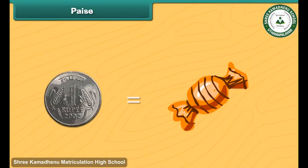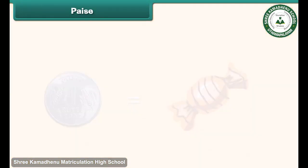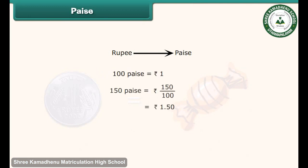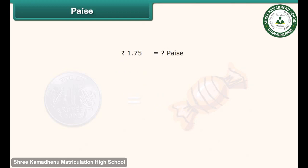Rahul purchased one toffee for 1 rupee. How will you convert this rupee into paise? 100 paise makes 1 rupee. Thus, 150 paise equals 150 divided by 100 rupees, which makes 1.50 rupees. When we convert paise to rupees, we divide by 100. How will you convert 1.75 rupees into paise? Multiplying 1.75 with 100, we get 175 paise.